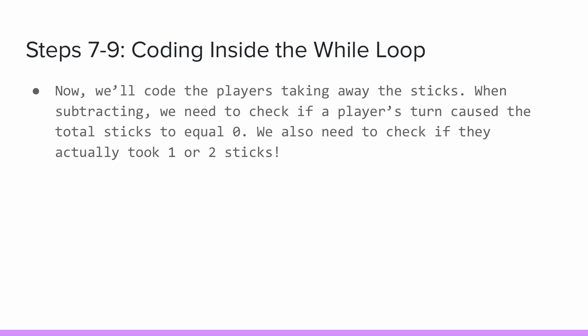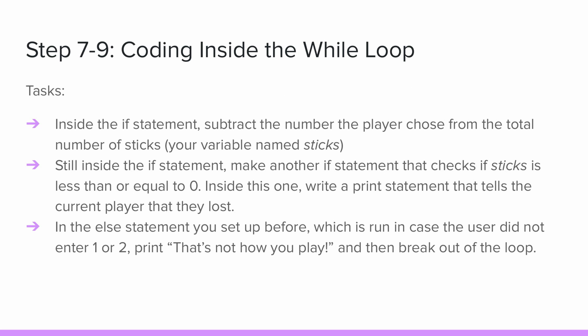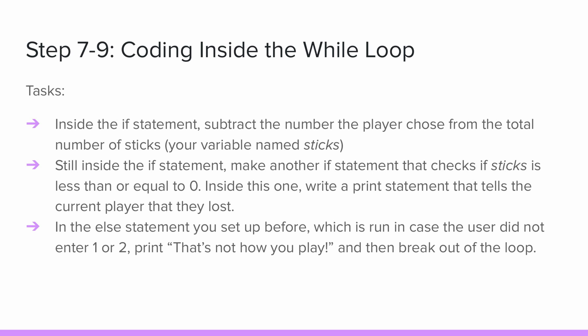Now we'll code the players taking away the sticks. Once each player takes sticks, we need to check if this turn causes the total sticks in the stack to equal zero. We also need to check if they actually took one or two sticks. Inside the if statement, subtract the number the player chose from the total number of sticks. Next, make another if statement that checks if sticks is less than or equal to zero. In the else statement, print 'that's not how you play,' then break out of the loop. This will run if the player did not take either one or two sticks. If you haven't already, run your code — the while loop should look similar to this.